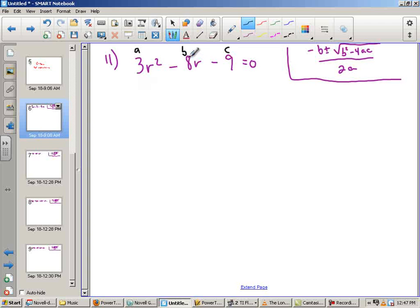I'm just going to start plugging in. If B is negative 8, then negative B is positive 8. So I'll start with 8 plus or minus the square root, and negative 8 squared is 64. 8 times 8, whether it's positive or negative, would be 64.